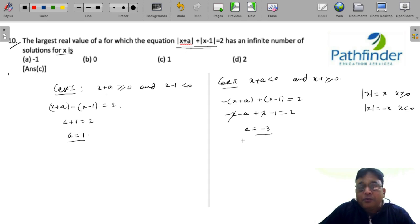But you have been asked to find the largest real value of a. So the largest real value of a is equal to 1, which is your answer.